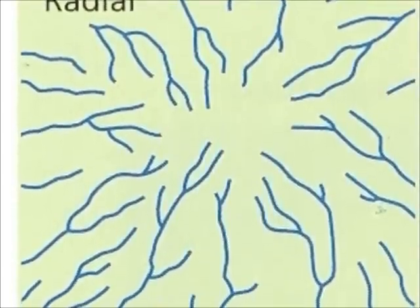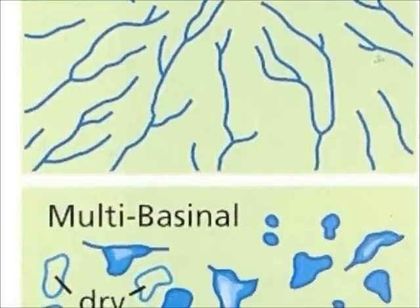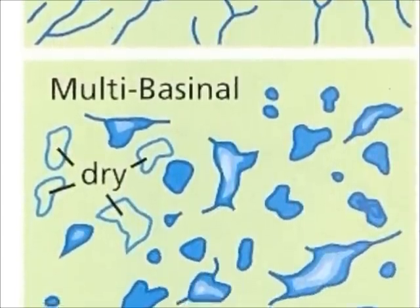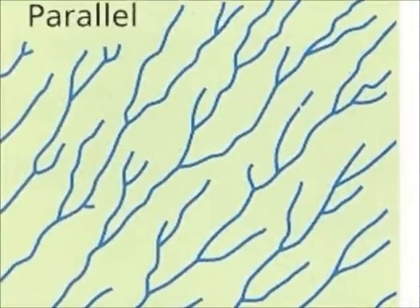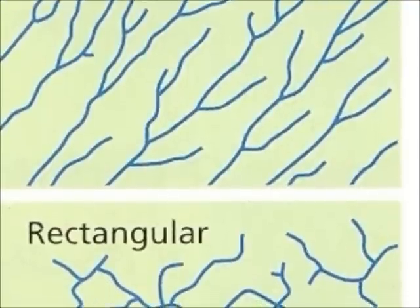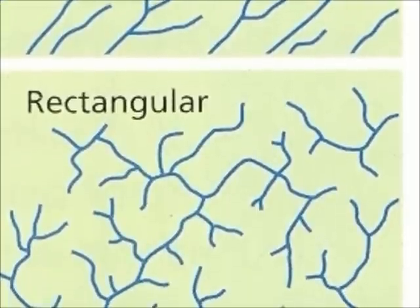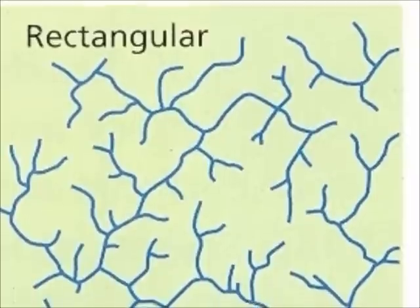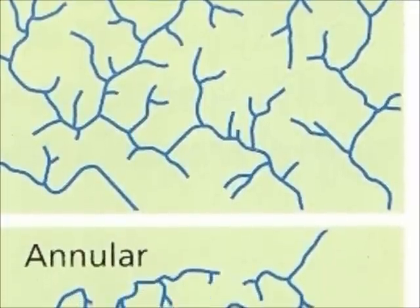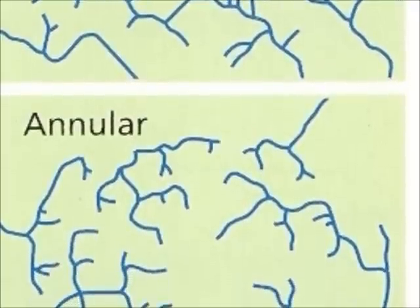Remembering that water runs downhill, think about the types of topography in which each of these types of drainage systems could be found. The eight types of drainage systems represented in this slide are not all commonly found, but they do represent different kinds of geologic processes. The author who developed this classification system illustrated how different kinds of geologic processes are reflected in the drainage systems on landscapes.